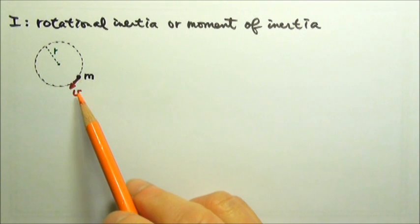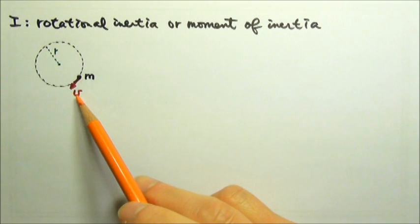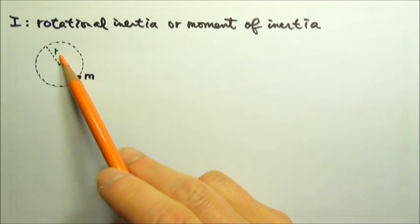Let's consider this point mass m doing circular motion with a speed v, and the radius of the circle is r.